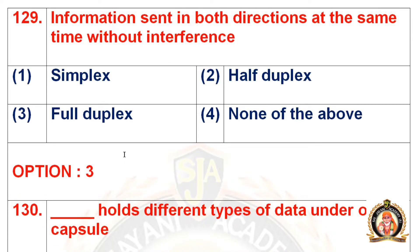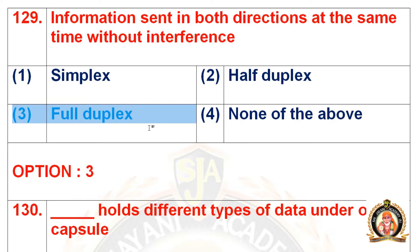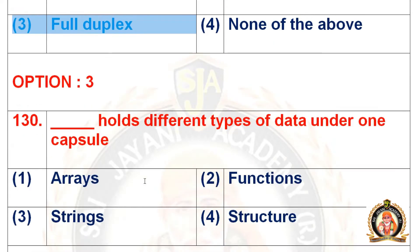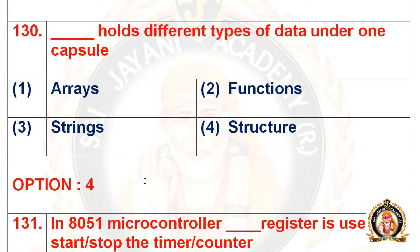Question 129: Information sent in both directions at the same time without interference. Options are simplex, half duplex, full duplex, and none of the above. The right option is the third option, that is full duplex. Information sent in both directions at the same time is called full duplex.